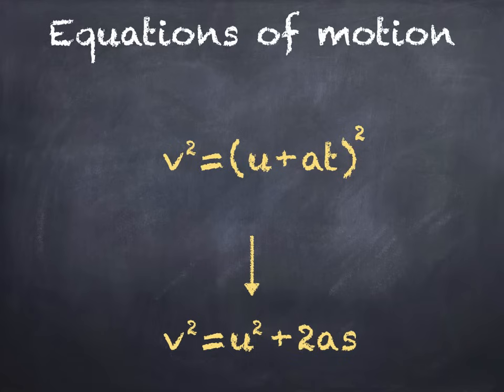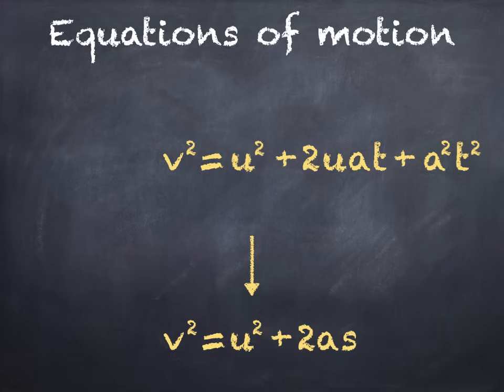We then want to multiply out the brackets. There's more than one way of doing this, but we should end up with v squared equals u squared plus 2uat plus a squared t squared.